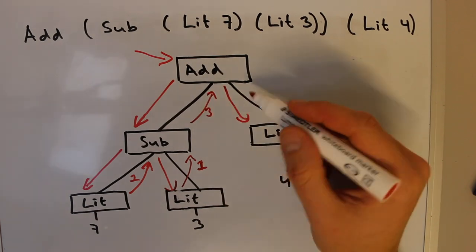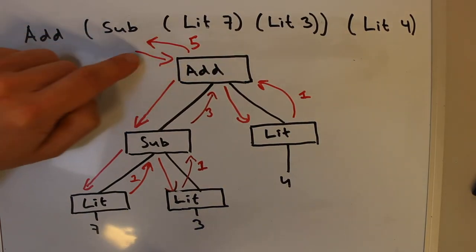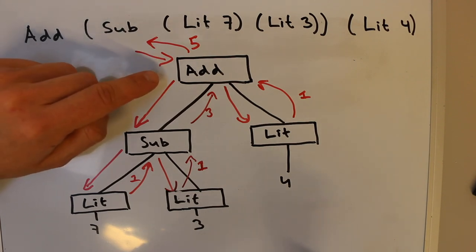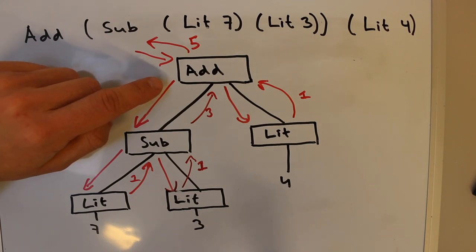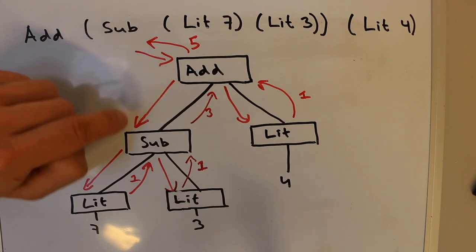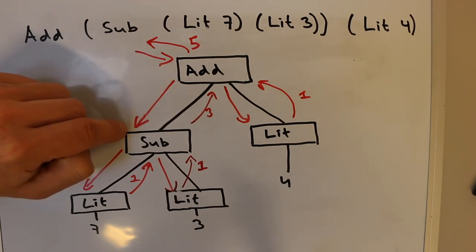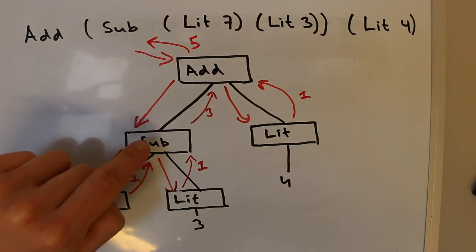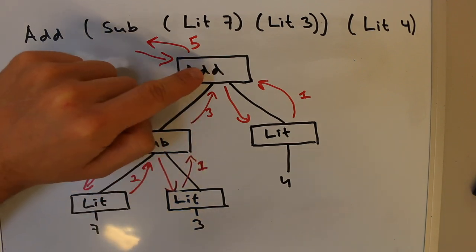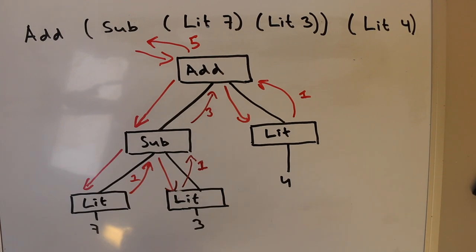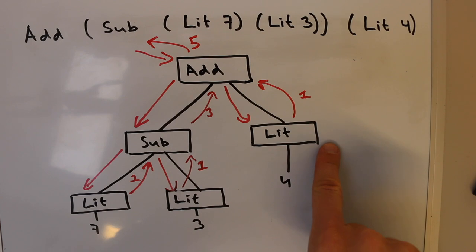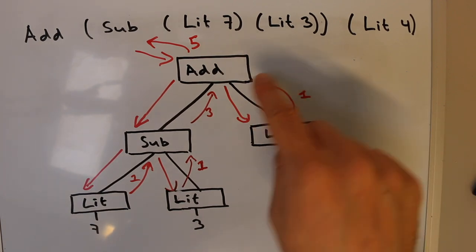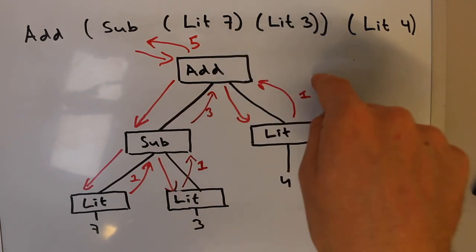If we draw a picture, it looks like this. First we call count on the root expression, which is an Add. We need to count both sub-expressions of that Add. For Sub, we count both its sub-expressions: each is a Lit, so each returns one. We add those two ones plus one for the Sub itself and return three. Then in the other branch, the Lit returns one. Adding three and one plus one for Add itself gives a total of five.